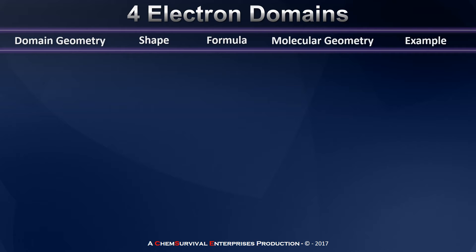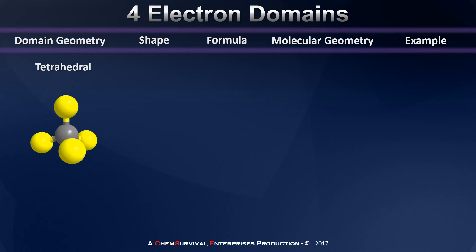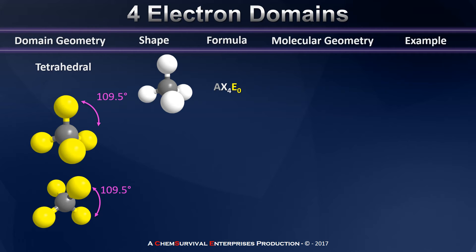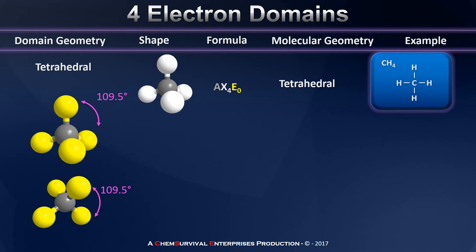As we move on to having four electron domains, we now have to move into the third dimension to get our domains as far apart as possible, assuming a geometry called tetrahedral, because connecting all of the domains together by lines results in the formation of a tetrahedron. All of the angles between and among the domains are 109.5 degrees. A compound with an AX4E0 formula has a molecular geometry exactly the same as the domain geometry — tetrahedral. An example is methane, where the central carbon has four bonding electron domains, each to a hydrogen.